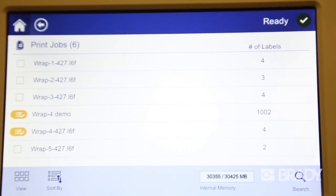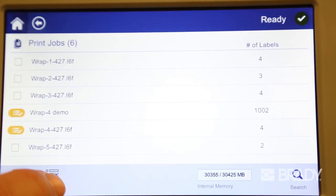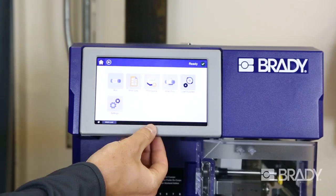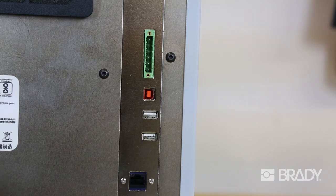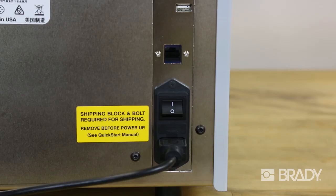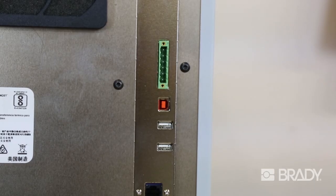With its onboard memory, you can save and store commonly used print jobs to be recalled when you need them. The Raptor A6500 comes with a variety of connectivity options, including multiple USB ports for extra storage, as well as Ethernet and PC connections.